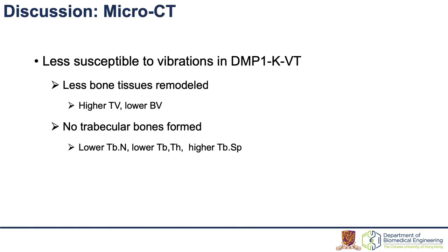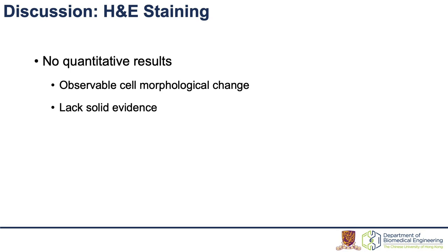Also, DMP1 knockdown was found less susceptible to vibrations. Higher tissue volume and lower bone volume were observed in the knockdown group, indicating that the bone tissues were less remodeled. On the other hand, lower trabecular bone number and thickness with higher spacing can be interpreted as less trabecular bone formation.